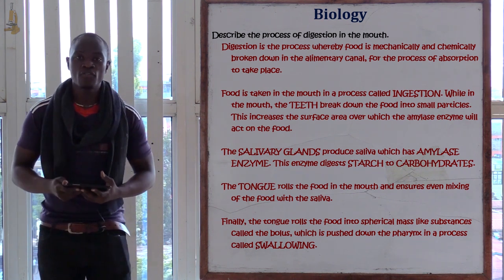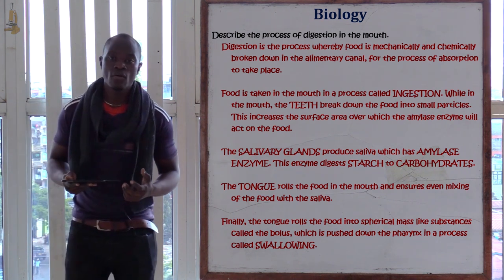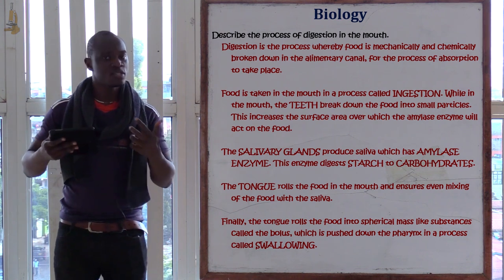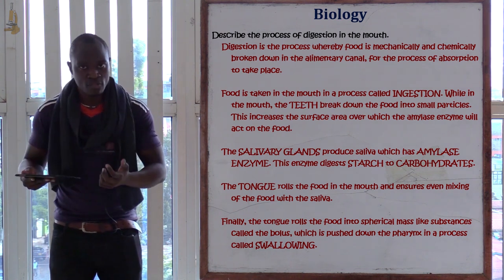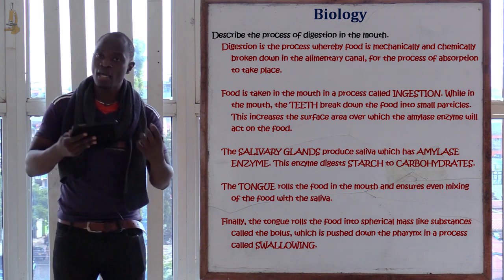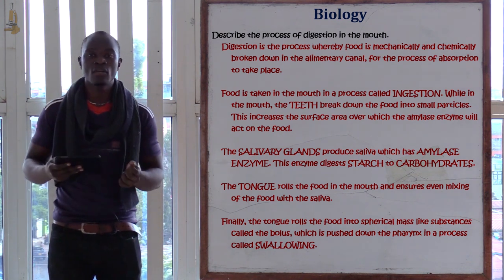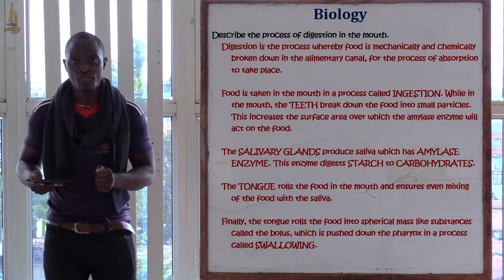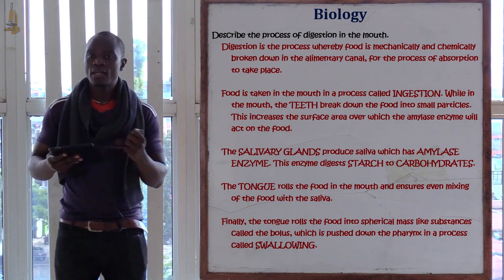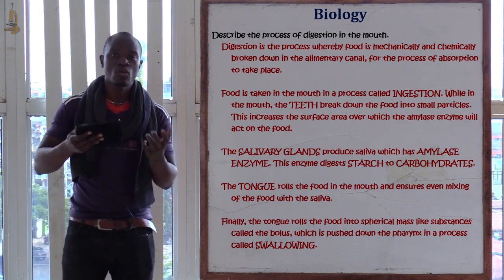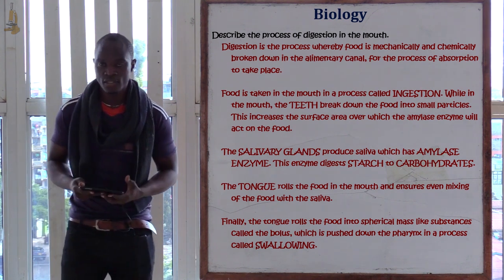For the chemical breakdown of food, this is where we are going to use enzymes and chemicals like hydrochloric acid in order to break down the food and for the enzymes to act on the food.